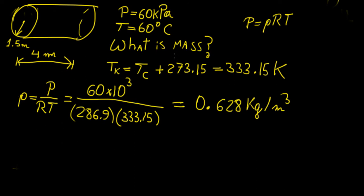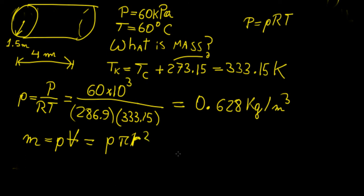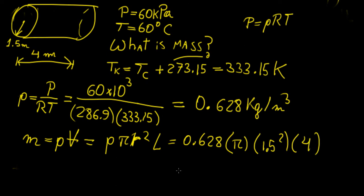Now we can find the mass, which equals density times volume. We have the dimensions of the container so we can find the volume. The volume of a cylinder is pi r squared times the length, so the mass equals 0.628 times pi times 1.5 squared times 4. This gives us a final mass of 17.76 kilograms — that's the mass of air contained within that container.